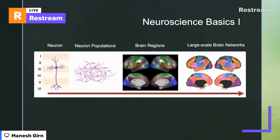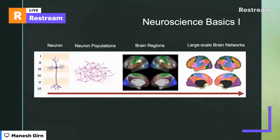From neural populations you get to the level of brain regions — a few different neural populations grouped together. Here is a map defined based on fMRI data, with around 400 parcels, where neurons within a given region are more connected to each other than to the rest of the brain. Going up another level you get brain networks — groups of brain regions that work together to perform shared functions. For example, the default mode network, the visual network, and the frontal control network.